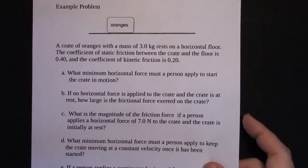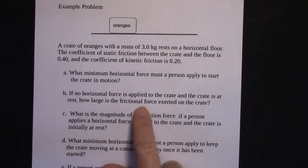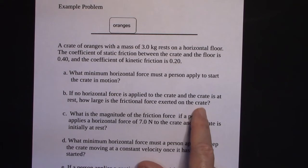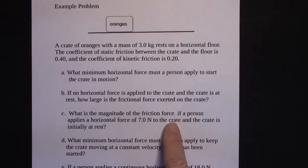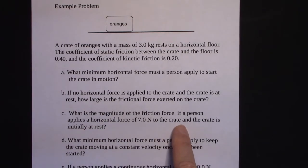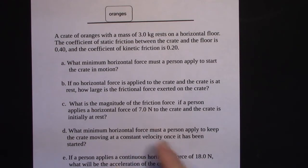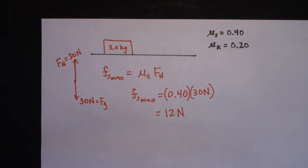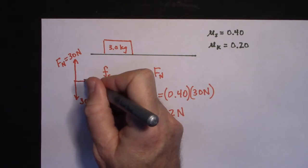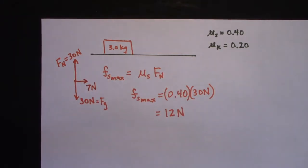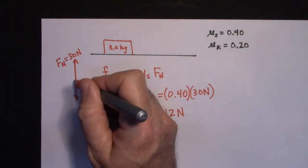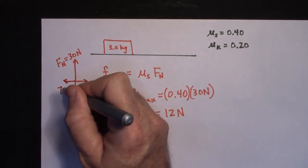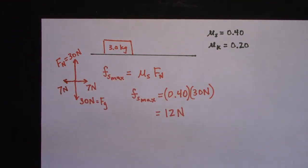Back to the problem: with no horizontal force applied and the crate at rest, the frictional force is zero newtons. Part three: what is the frictional force if a person applies seven newtons and the crate is initially at rest? The crate won't move because seven newtons hasn't exceeded the 12-newton maximum. Friction matches the applied force, so the frictional force is seven newtons. There's nothing to calculate — just apply the reasoning.